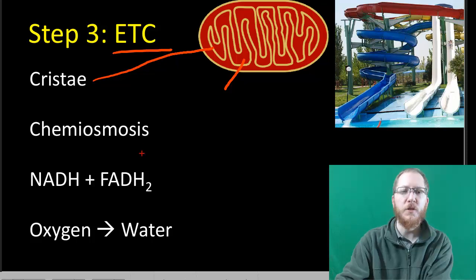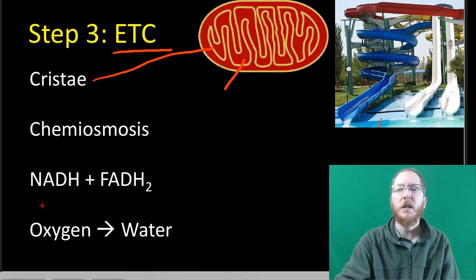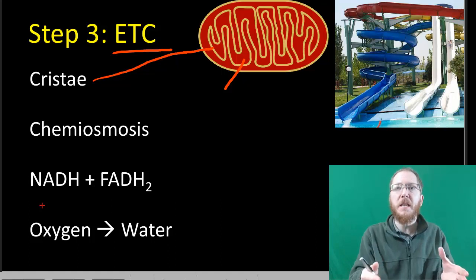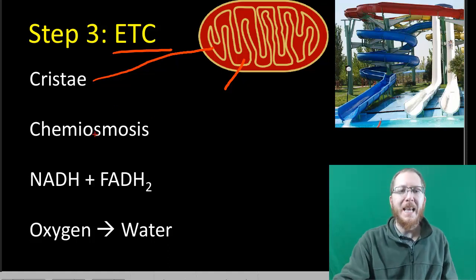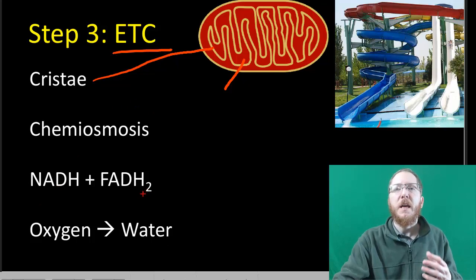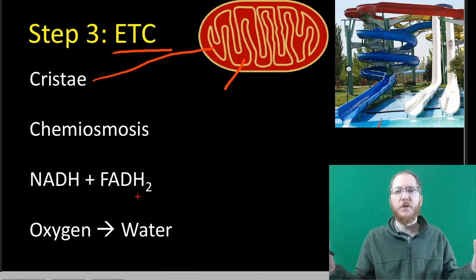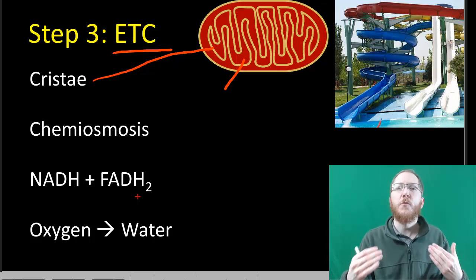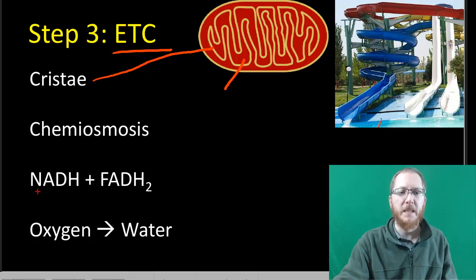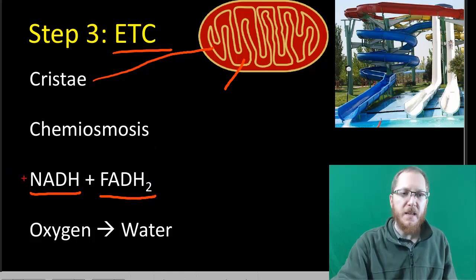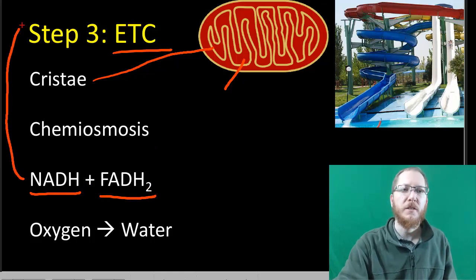This process is going to use all these energy molecules that we said we can't use right away. ATP is a finished product you can use anywhere in the cell. But NADH or FADH2, they're not as universally useful. You have to have the right machine. It's like me giving you Chuck E. Cheese money, where you can only use it at Chuck E. Cheese. It's not universal like ATP. For us to use this, we have to have the right equipment.